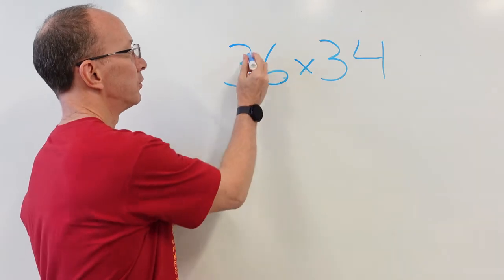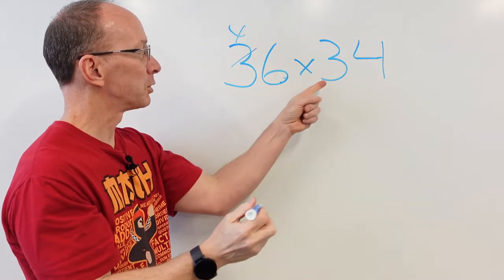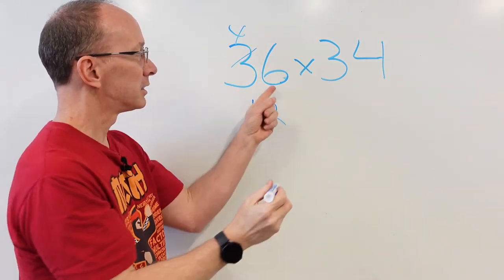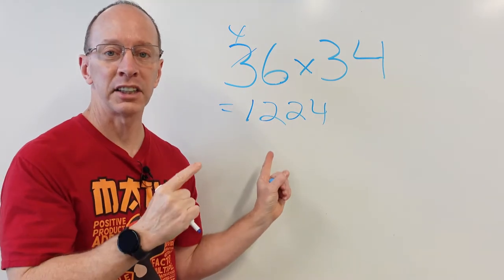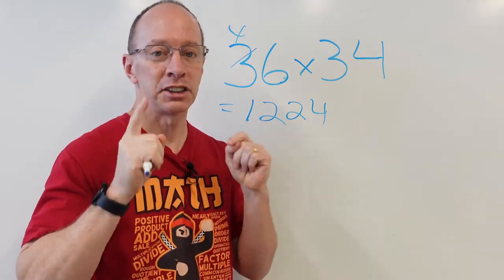All right, three, change that to four. Four times three would be twelve. Six times four would be twenty-four. Boom, that's the answer. Want to find out how I did it? Stay tuned.